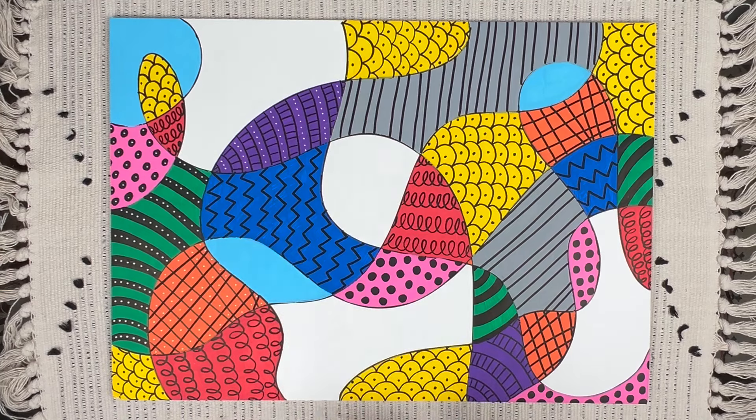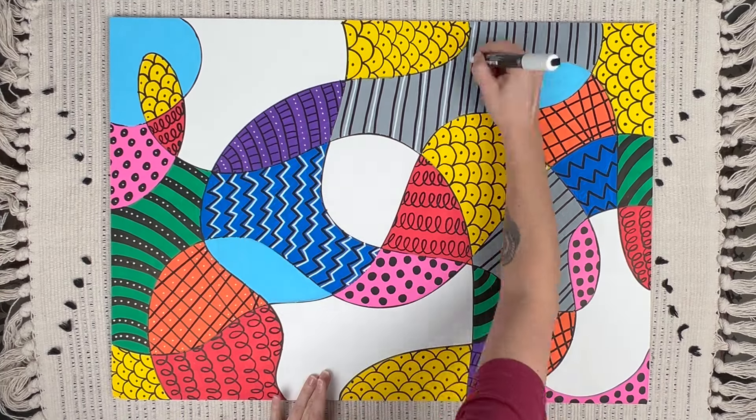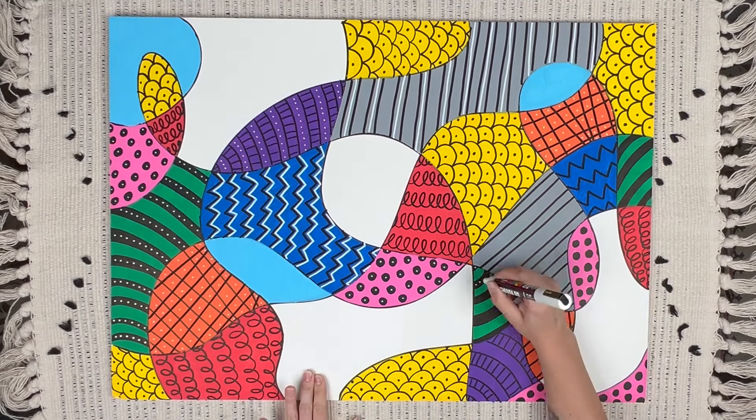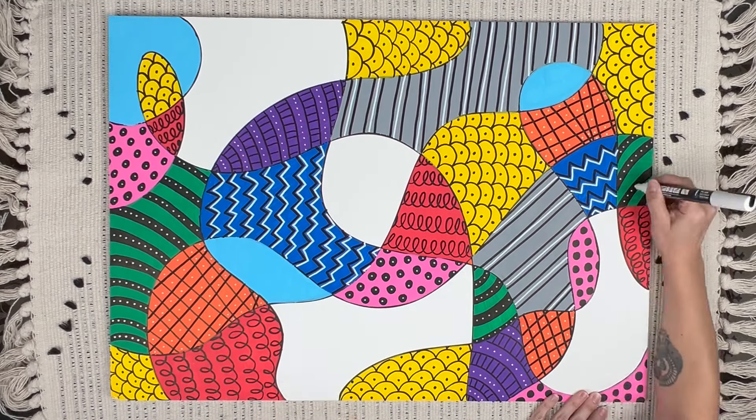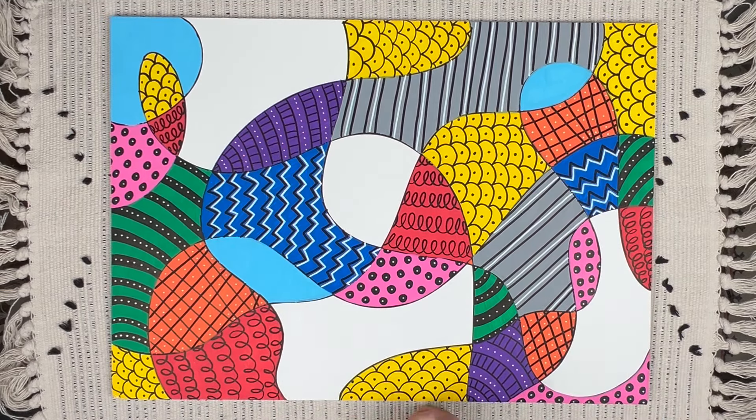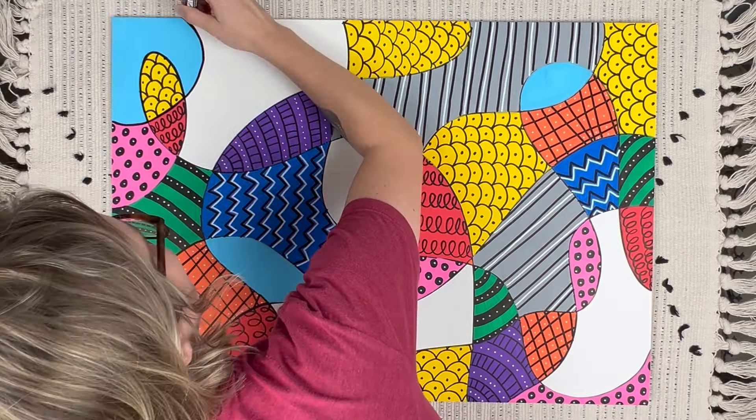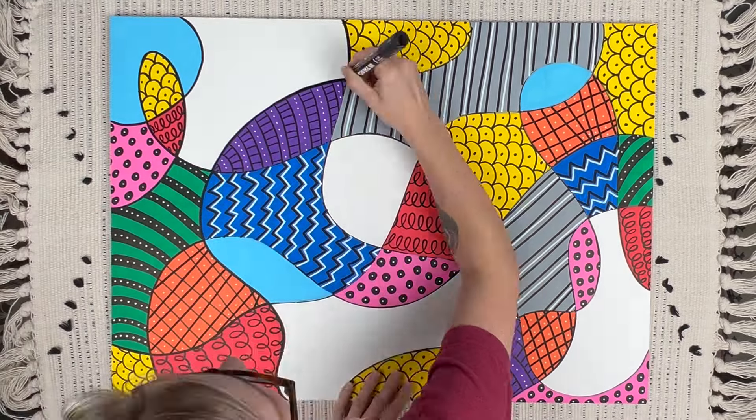Now I'm bringing in my white Posca pen and just adding some of those white details. I took the black paint pen and I'm retracing all of those black lines.